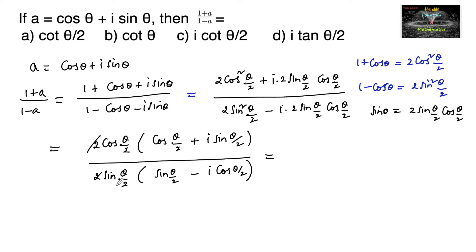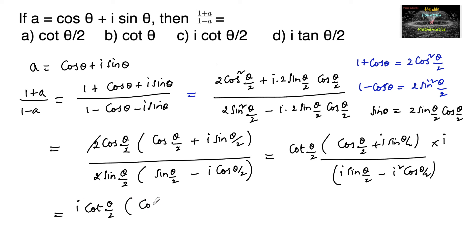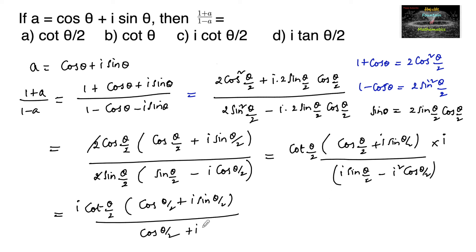The 2s cancel, leaving cos(θ/2) / sin(θ/2) times [cos(θ/2) + i sin(θ/2)] / [sin(θ/2) − i cos(θ/2)]. Multiplying through and using i² = −1, we can cancel (cos(θ/2) + i sin(θ/2)) from numerator and denominator, giving i · cot(θ/2). So the answer is option C.